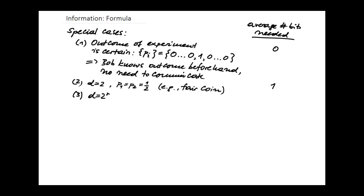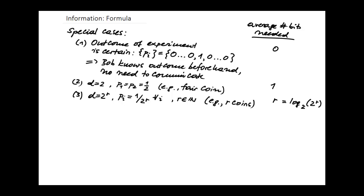Next special case: there are 2^r possible outcomes, where r is a natural number, and all outcomes are equally likely — probabilities are all 1 over 2^r. What does that correspond to? Exactly — that's flipping r coins. How many bits do you need to communicate the result of flipping r coins? You need r bits, which is the same as log base 2 of 2^r — the binary log of 2^r.